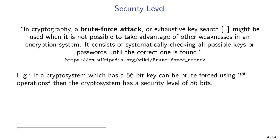The term 'operation' here is not strictly defined — it can be a basic arithmetic operation like addition or multiplication, or a full decryption attempt consisting of many basic operations. But the point is that by 'security level' we express the order of magnitude of the attack's complexity. If one brute force attempt takes 100 basic operations, the total is 2^56 × 100. The multiplier 100 does not have too significant an effect on overall complexity, while the number in the exponent has a much bigger impact.